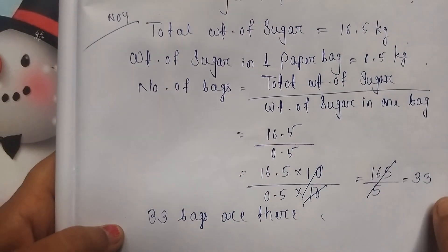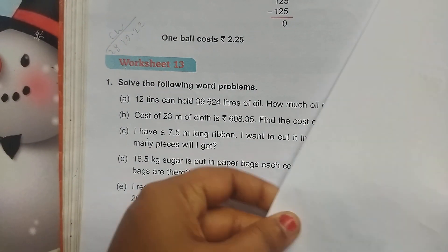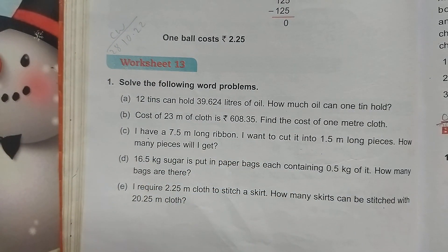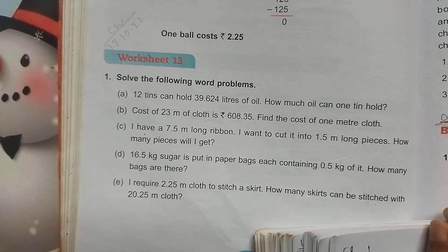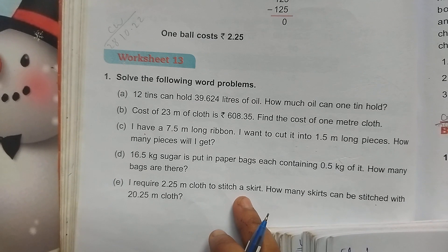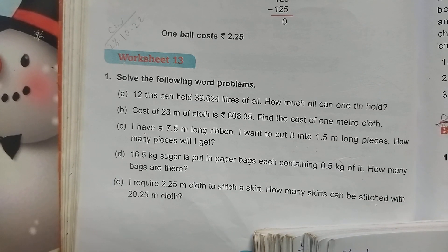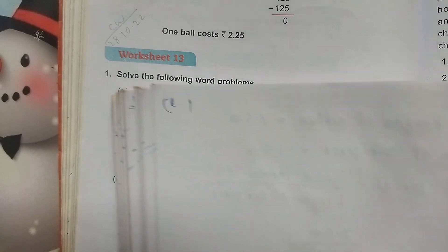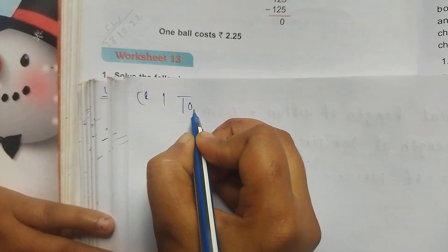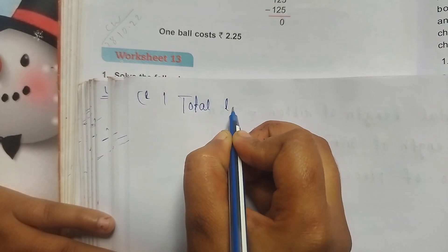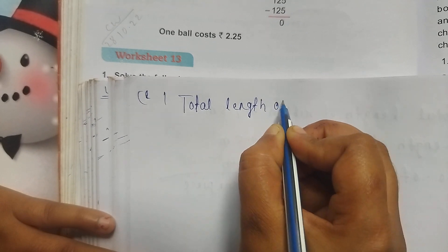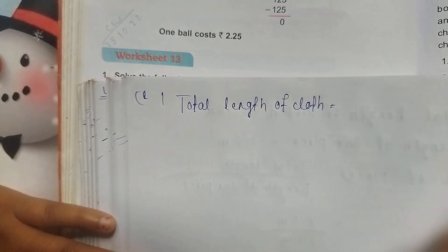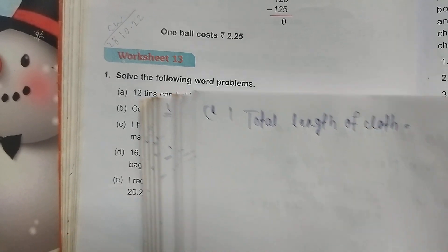Now I solve question number 5. I require 2.25 metres of cloth to stitch a skirt. How many skirts can be stitched with 20.25 metres of cloth? Total length of cloth is 20.25 metres.